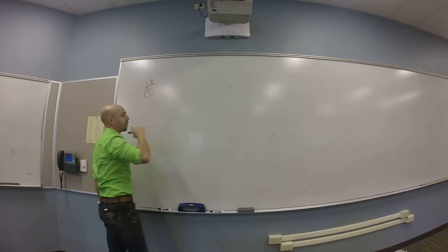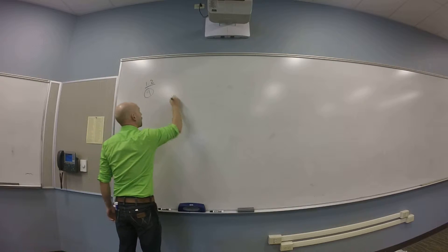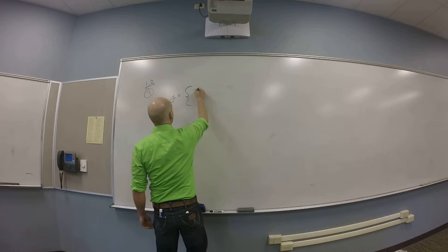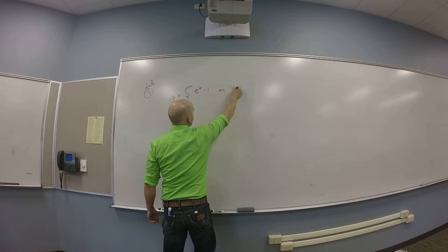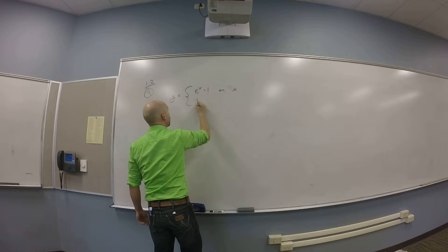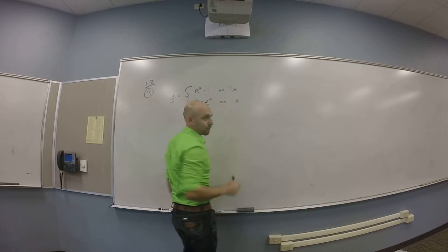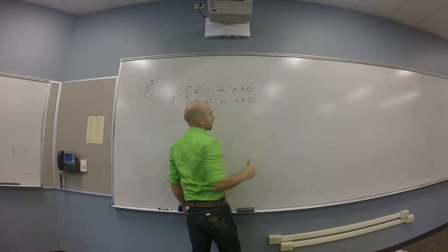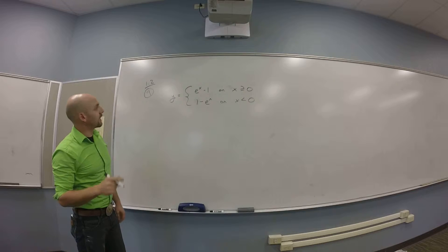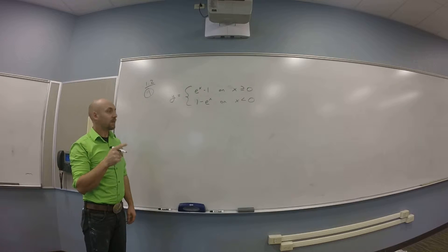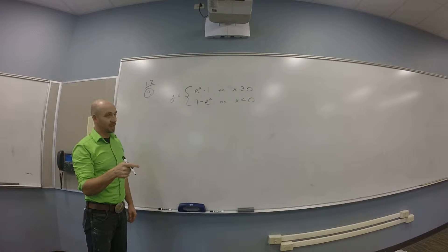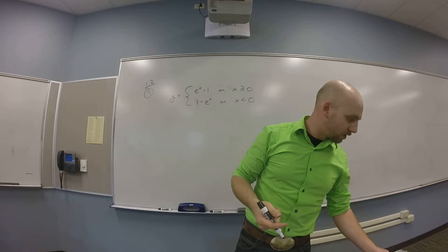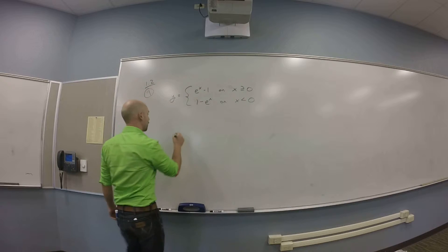Just a thought on 1.2 number 9. We have this function y: it's e to the x minus 1 on x is something, and 1 minus e to the x on x is something else. So it's e to the x minus 1 when x is positive, and it's 1 minus e to the x when x is negative. And they want me to show that this satisfies the differential equation y prime equals the absolute value of y plus 1.